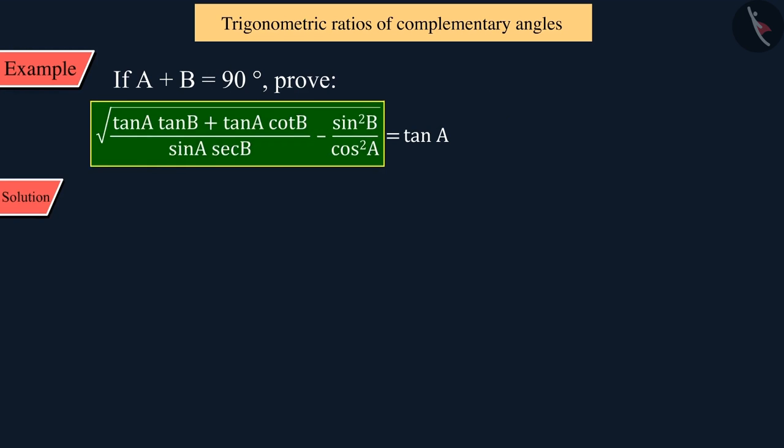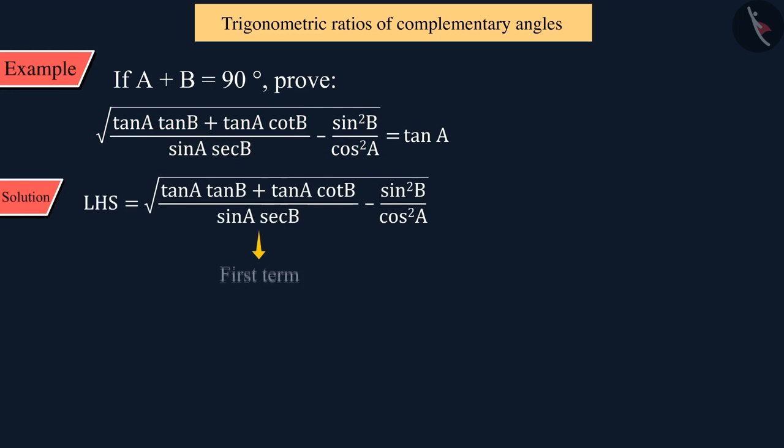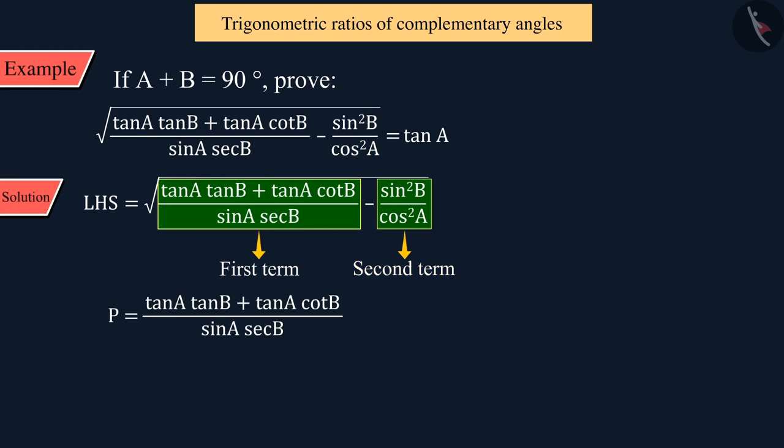Let us discuss the left side of the equation. For easy understanding, we represent the first term of the square root with P and the second term with Q, where the angles A and B are acute angles. This can be expressed as equation 1.